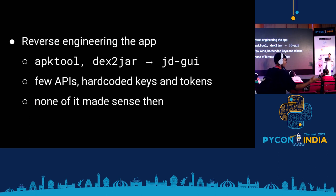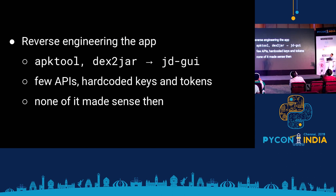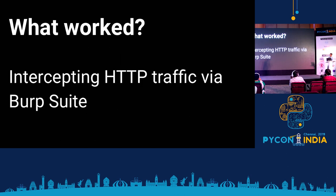So we moved on to reverse engineering the app itself, using the textbook method for Android reverse engineering. The three main tools we used were APKTool, Dex2jar, and JADX. APKTool converts your binary APK package into Dex files — compiled bytecode that runs on the Android Dalvik virtual machine. We then converted it into a JAR using Dex2jar, and visualized it into more readable code using JADX, which is a Java disassembler. Most of it was obfuscated, but we did find a couple of hard-coded keys, tokens, and API endpoints — though it didn't make much sense then, so we moved on to the next obvious approach.